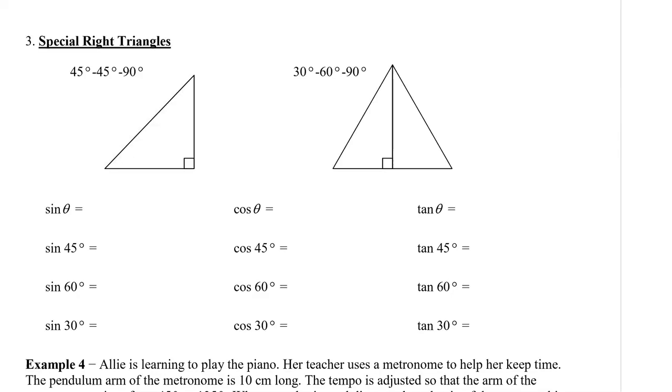In this video, I'm going to show you how to use the special right triangles to find the exact length of sides. There are two special right triangles: the 45-45-90 degree triangle and the 30-60-90 degree triangle.